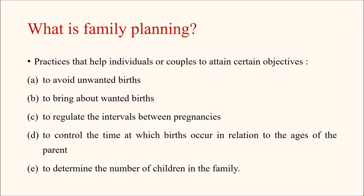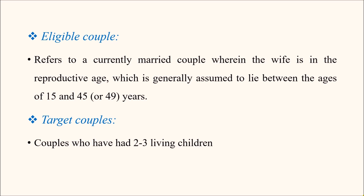Another objective is to control the time at which birth occurs in relation to the ages of the parents, especially the mother — at what age the pregnancy occurs. This is important because early pregnancy is not physiologically or socially acceptable, especially in the case of girls. They can also determine the number of children in the family — deciding how many children they want to have.